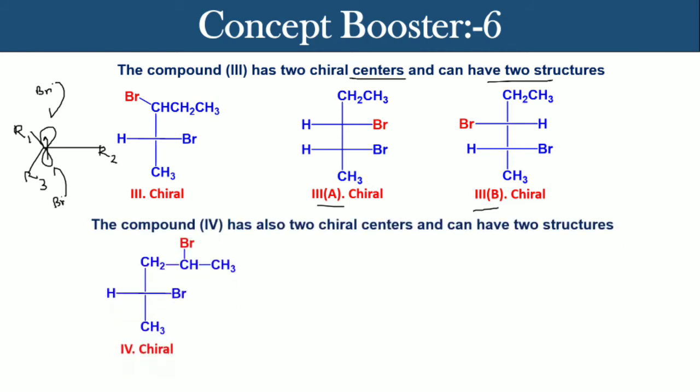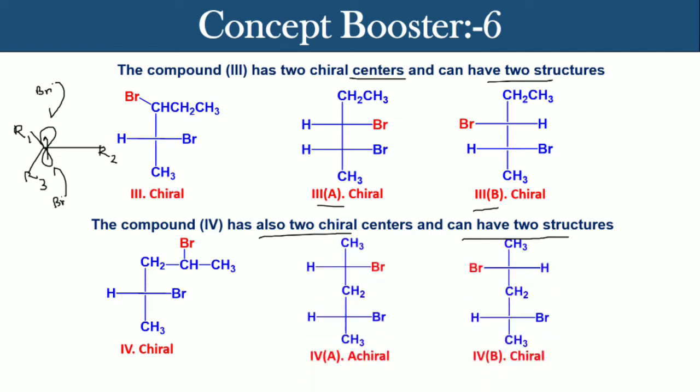And compound four has also two chiral centers and can have two structures for the same reason: structure 4a and structure 4b. Structure 4a is achiral because there is a sigma plane of symmetry, but in 4b there is no such sigma plane of symmetry, so it is chiral.